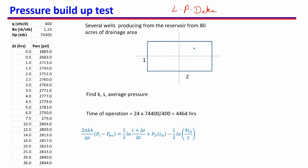Now we have discovered that reservoir and developed it using several wells. There are several wells in the reservoir producing at some flow rate, but we will do the build-up test only on one well. The well at which we are doing the build-up test is producing at a flow rate of 400 stb per day. Because we have been producing for a very long time, the BO in the reservoir has increased from 1.22 to 1.23.